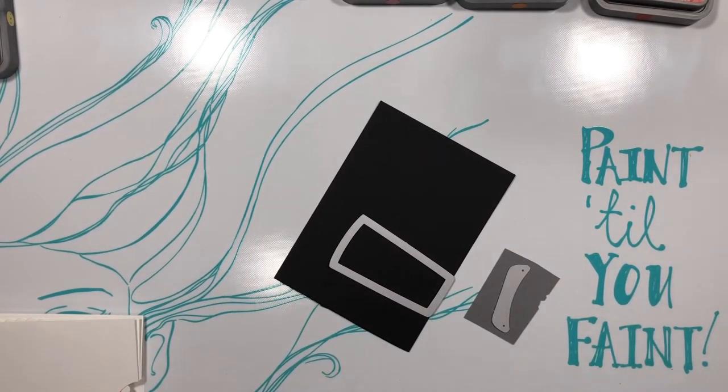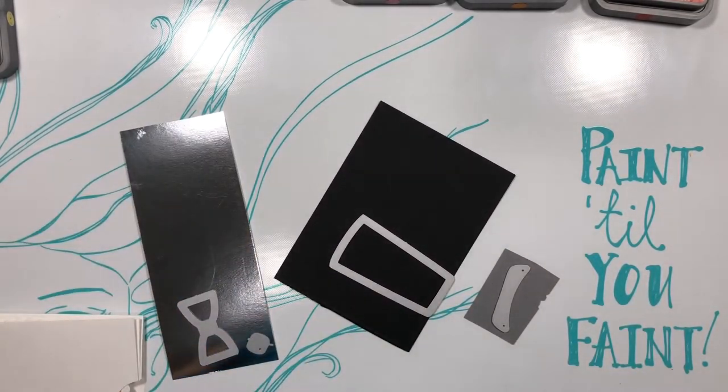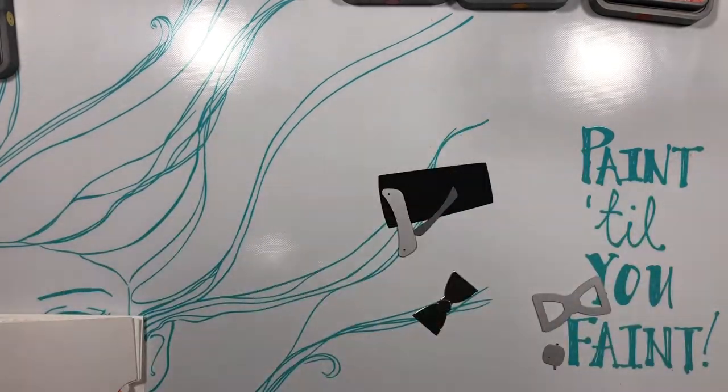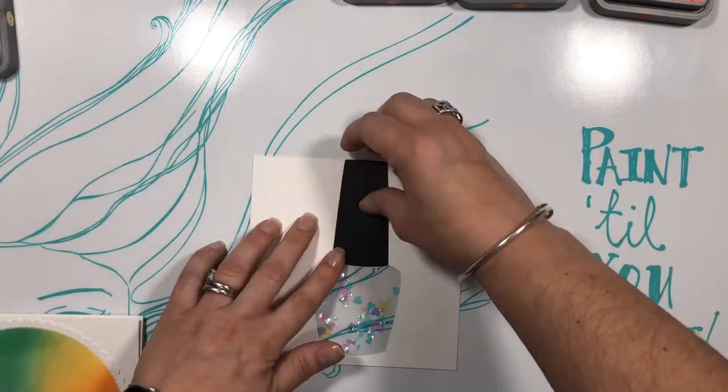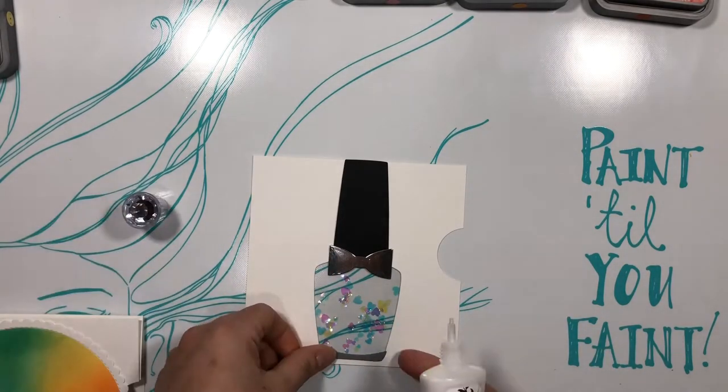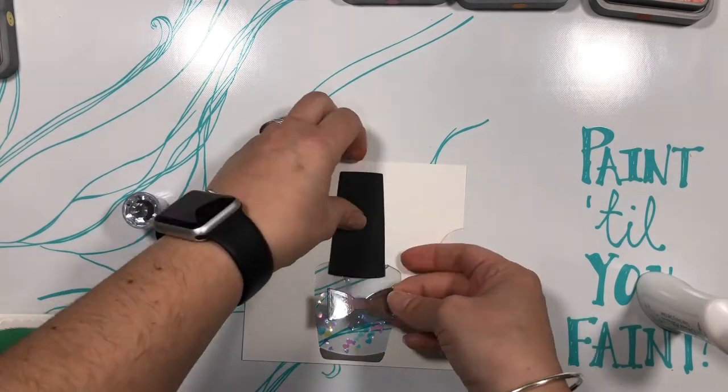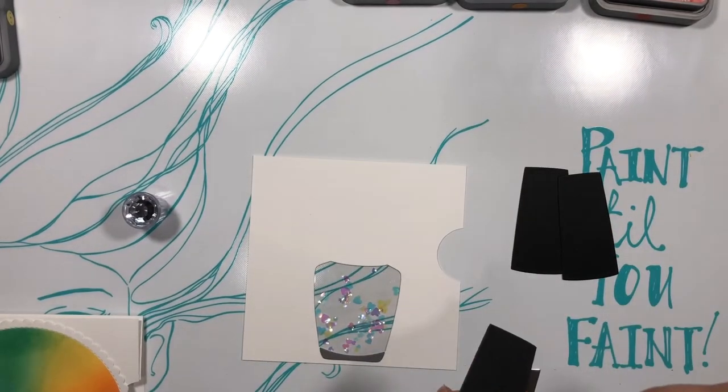So now I'm just going to die cut the rest of the pieces for the nail polish bottle. In here I'm just going to finish putting the bottle together. Initially I had only cut out one layer of the bottle top but in the end I wanted to add a little more dimension so I ended up cutting two more layers out.